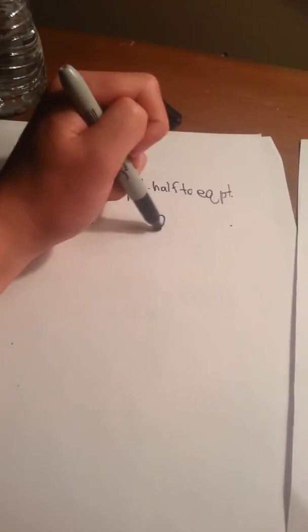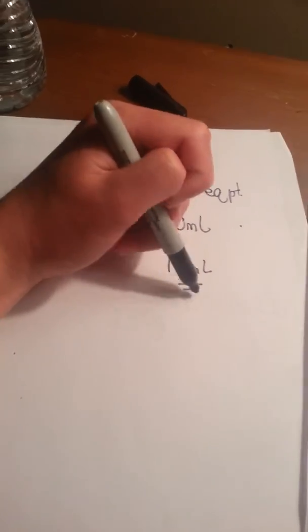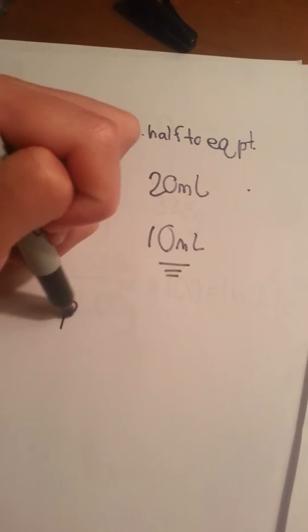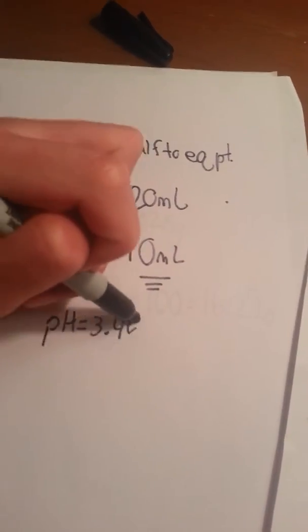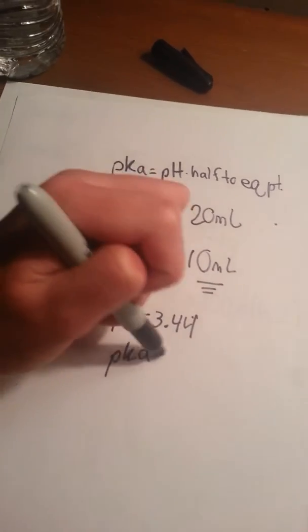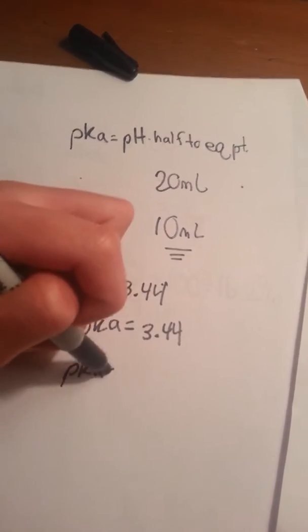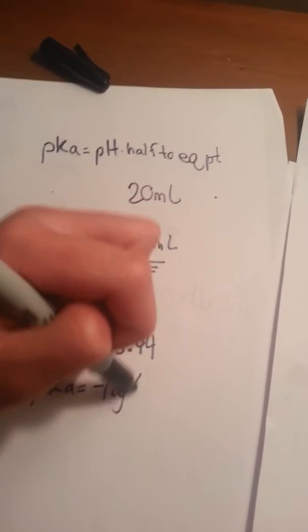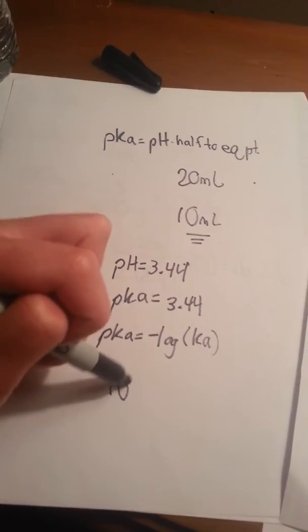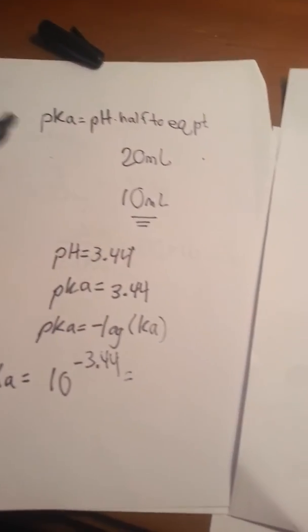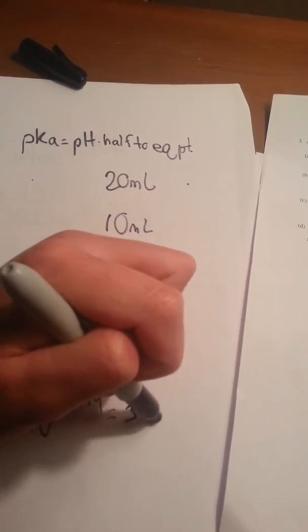The equivalence point is 20 milliliters, so halfway there we're at 10 milliliters. If we look on this chart, at 10 milliliters the pH is 3.44. So pH equals 3.44, and that also means pKa equals 3.44. Since pKa equals negative log of Ka, to find Ka we do 10 to the negative 3.44. That gives us 3.6 times 10 to the negative 4. We're done with part I.